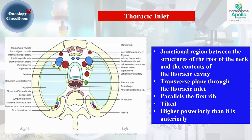The thoracic inlet is basically an imaginary junction between the soft tissues of the neck and the beginning of thoracic contents. It is not a clear-cut anatomical structure but an imaginary transverse plane running above the first rib. Because the ribs are positioned slightly more caudal anteriorly compared to posteriorly, the anterior aspect of the thoracic inlet is at a lower level than the posterior aspect.